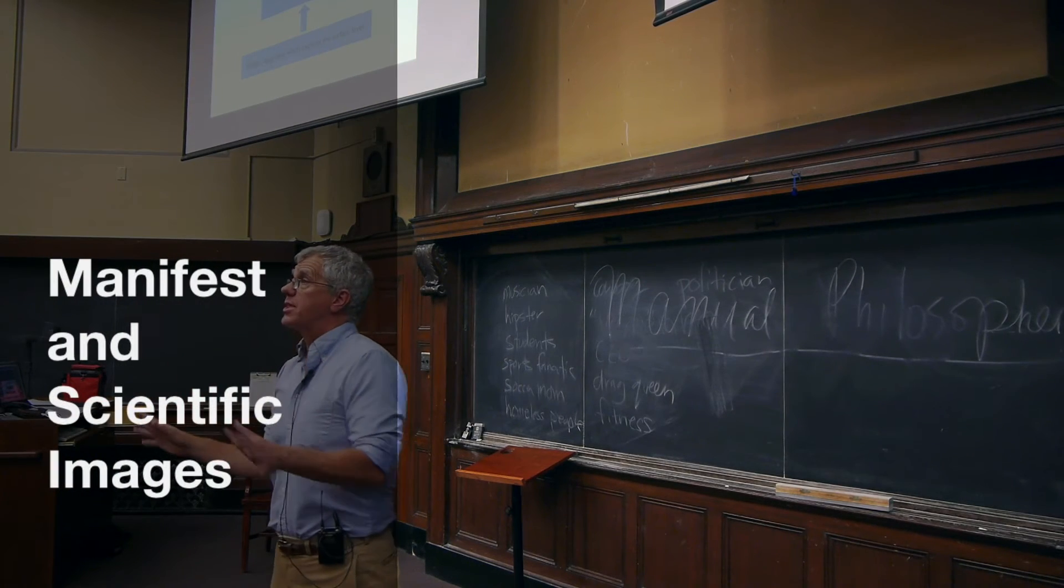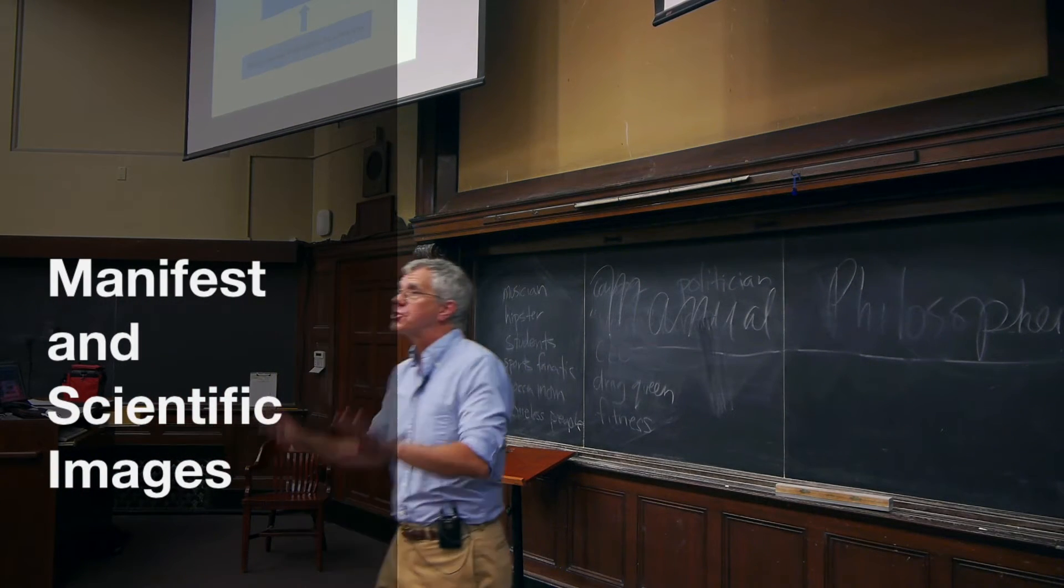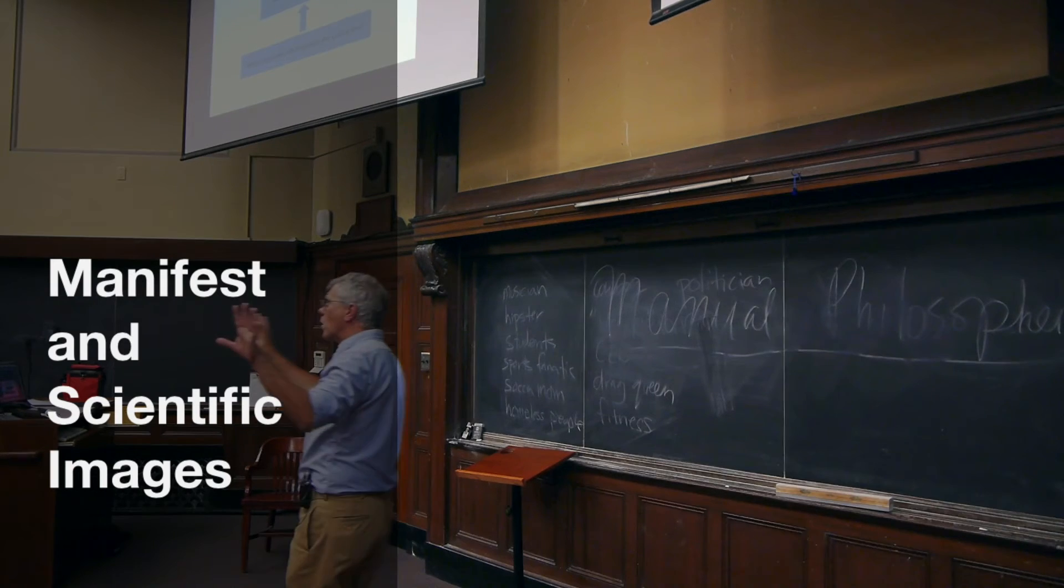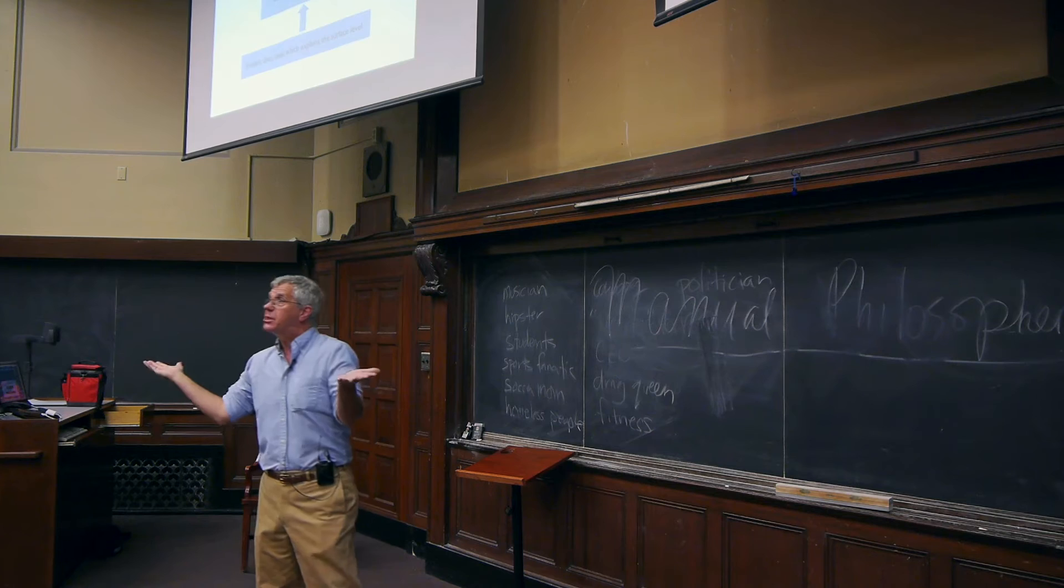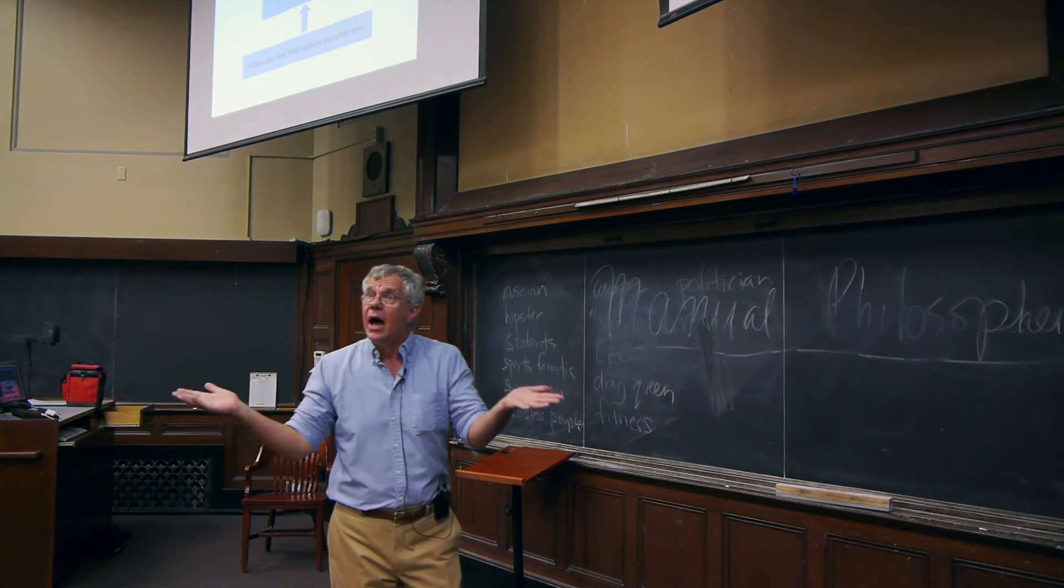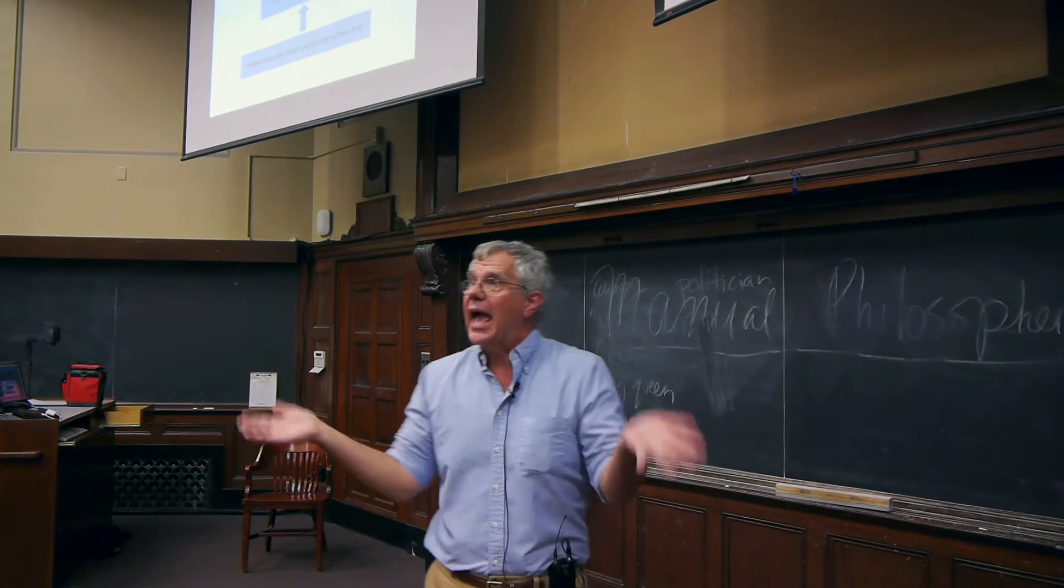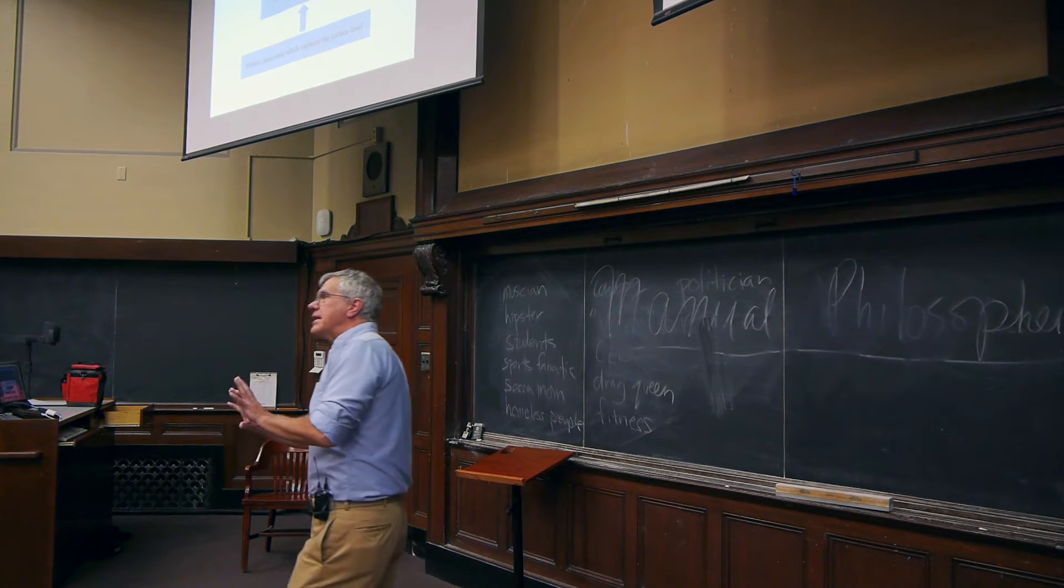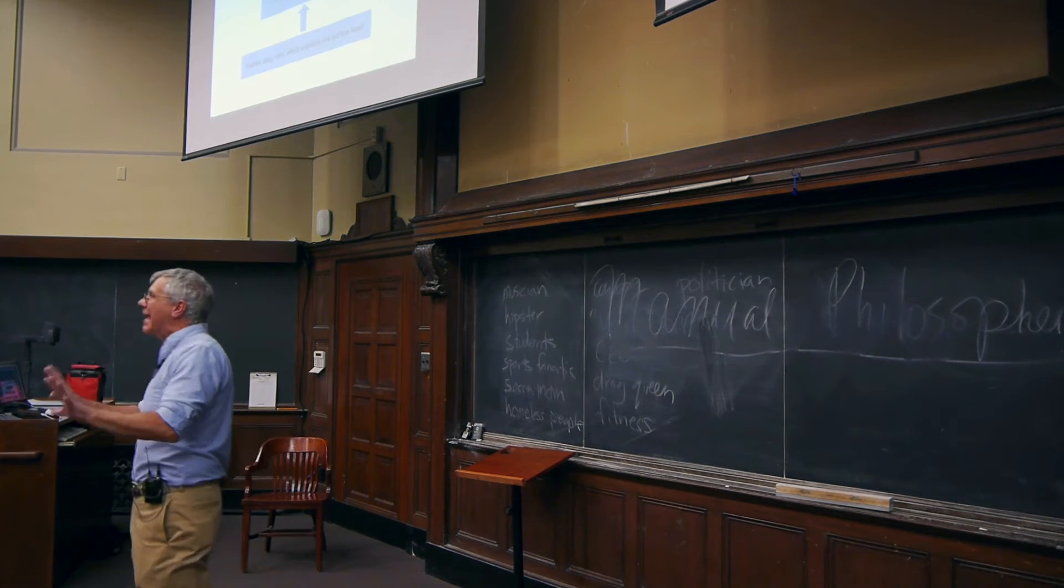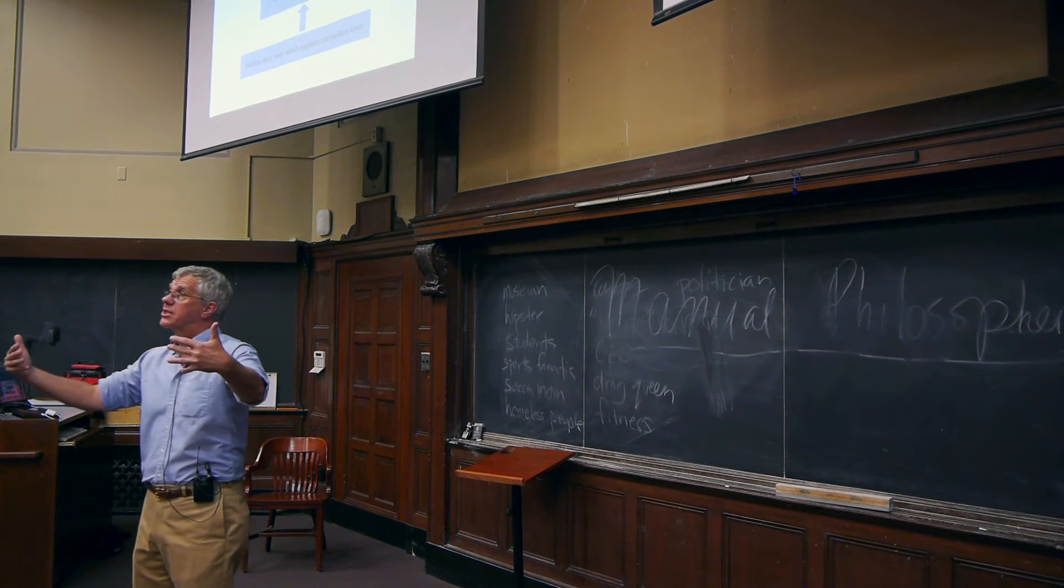Last time we talked about two-level theories and the distinction between a surface level, the world and ourselves as we appear to us, the world as it seems to be consisting of ordinary objects, people, things, animals, and so forth, and then a deeper level, a level of theoretical objects that is meant to explain the activity of things at the surface level.